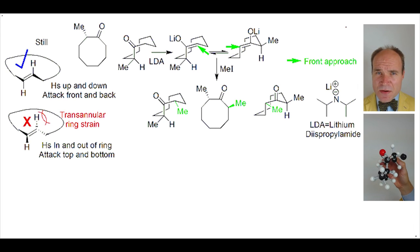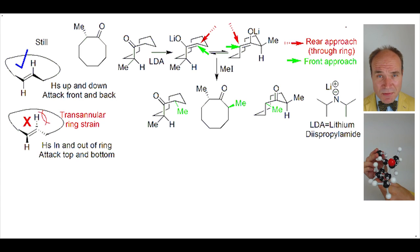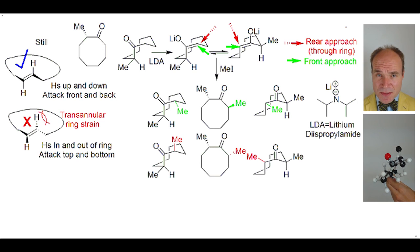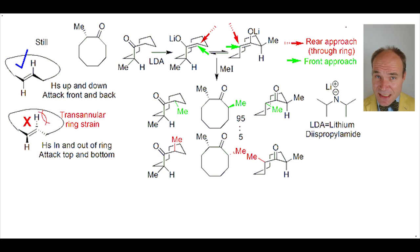However, if the approach comes from behind, that would generate axial methyl groups, but that would mean the chemical passing through the ring itself, and that is very sterically problematic. Thus, the result is very high diastereoselectivity for the diastereomer related to the frontal approach.